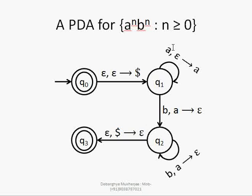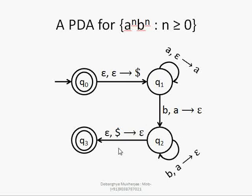To sum up: whenever an a comes, we push it onto the stack. Again and again, as many a's as come we keep pushing onto the stack. When the b's come we start popping them out until the dollar is encountered.